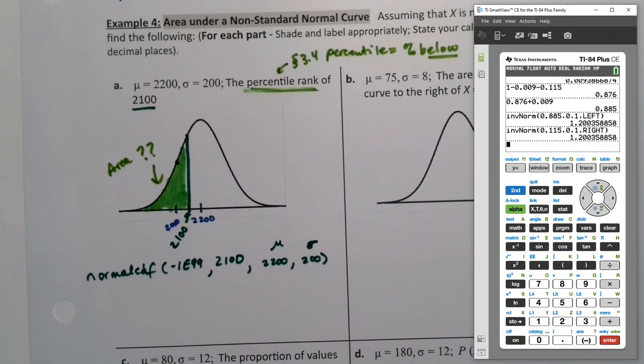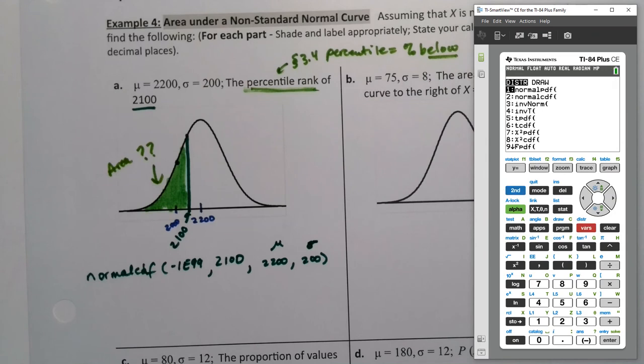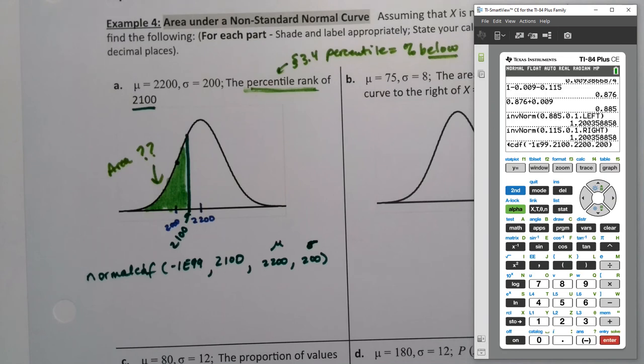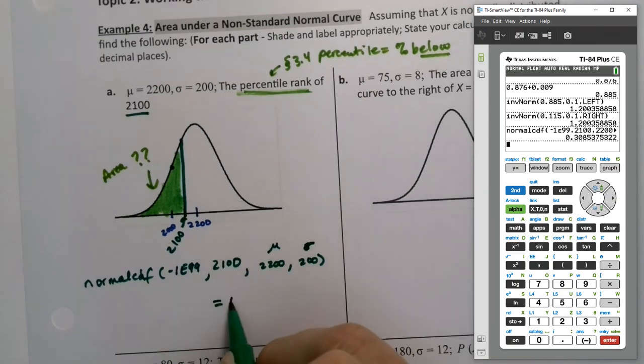So on the calculator, this part is the same for all the calculators. So normal CDF. Negative one E99 is right there. Otherwise you would type it negative one second comma 99, but it was there. So then arrow down 2100. And then here's the difference. I have to put in the values that were given. It's not zero and one. This is not a z score. So 2200 and 200 paste, press enter.